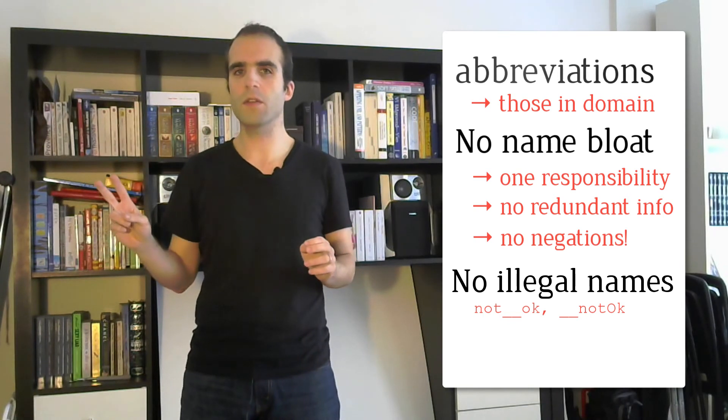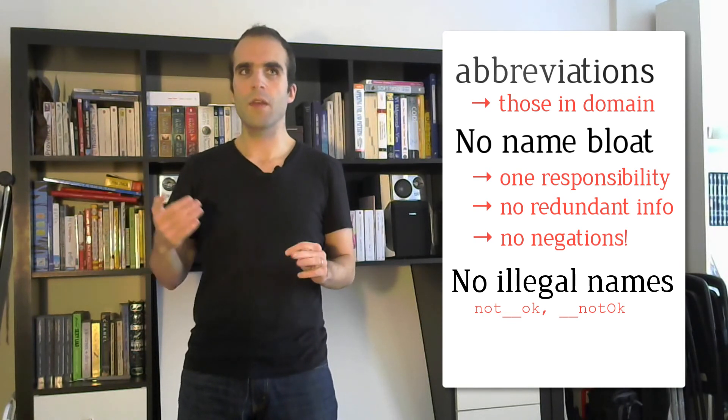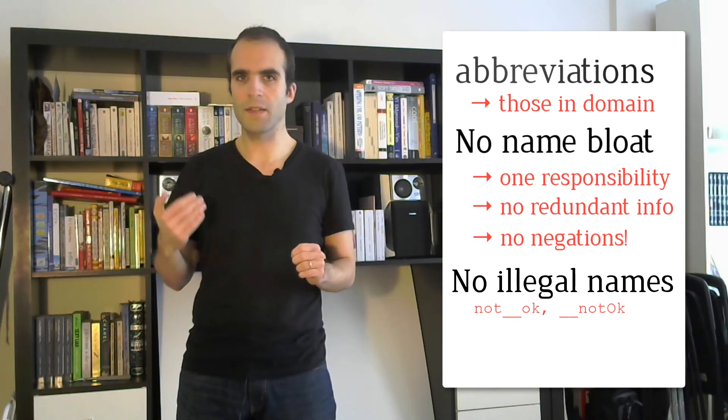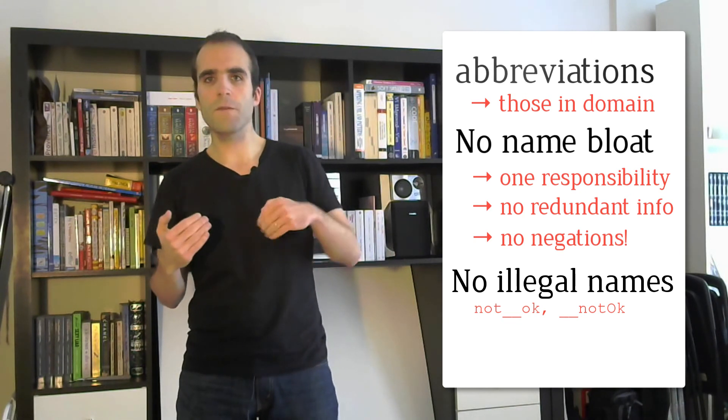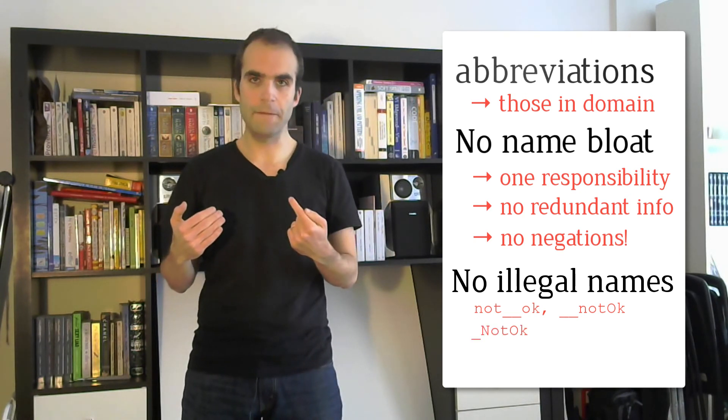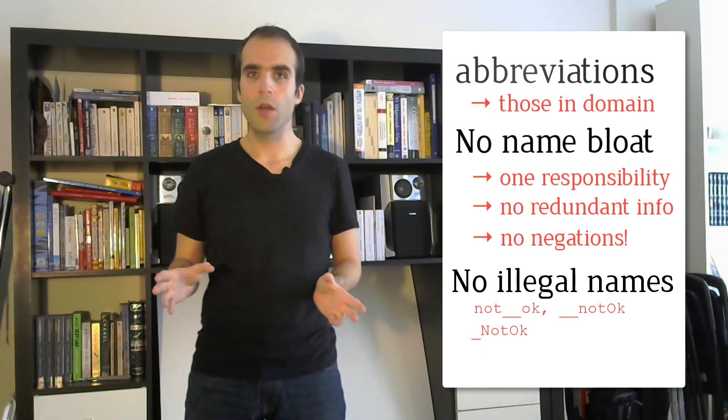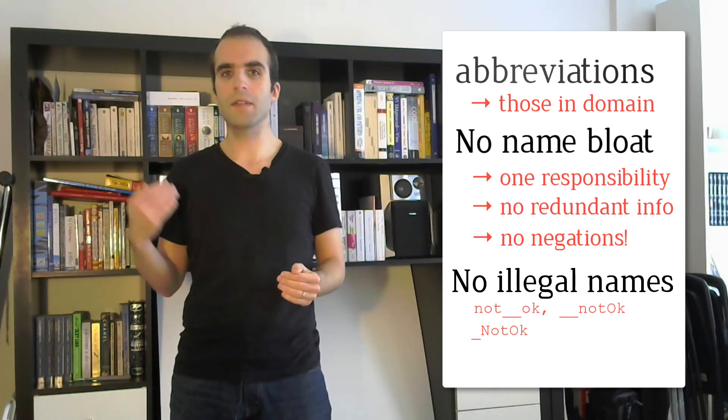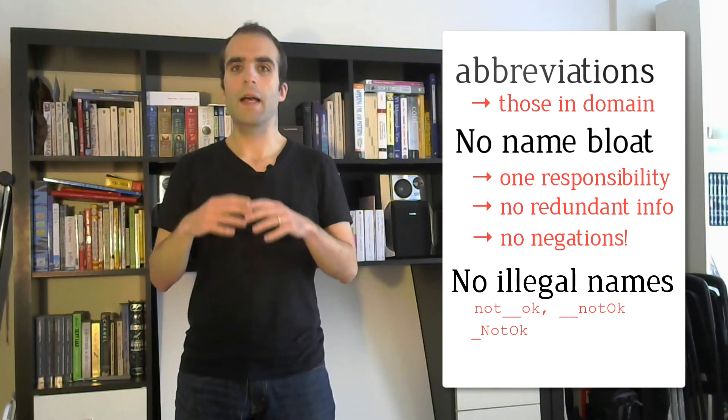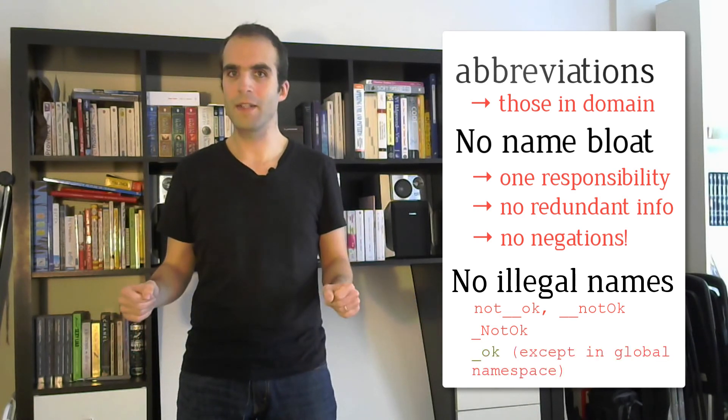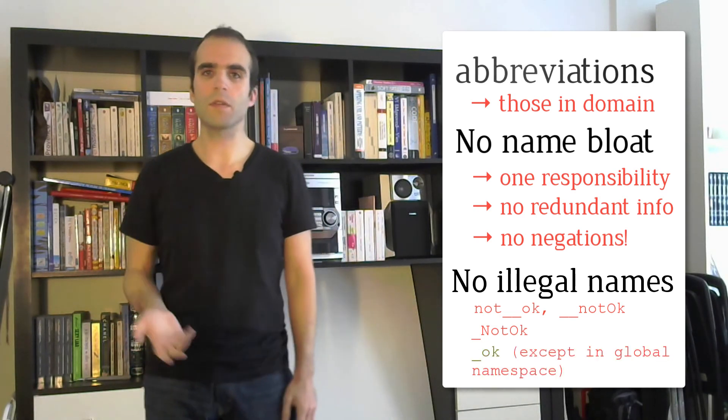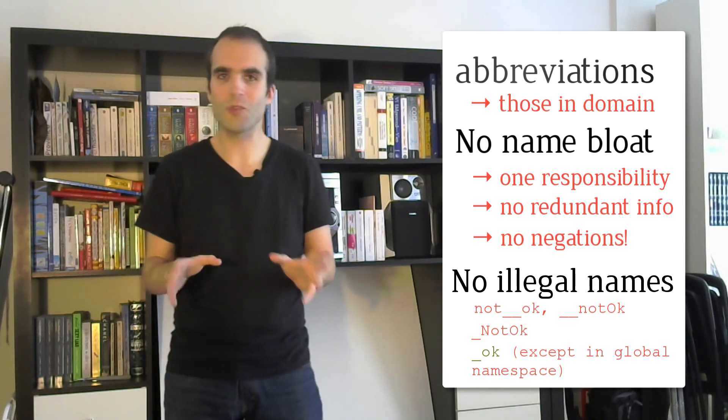Apart from two consecutive underscores, we can't start a symbol with an underscore followed by a capital letter, and in the global namespace, we can't even have a name that starts with an underscore at all. We just don't want to go that way.